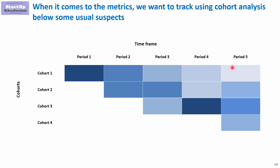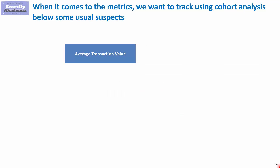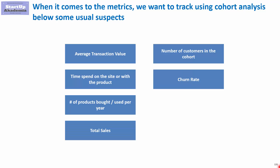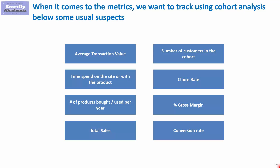As we have said in the cohort analysis, you want to track the behavior of a specific KPI in time by cohort. There are some usual suspects I recommend considering: average transaction value, time spent on the site or with the product, number of products bought, use per year, total sales, number of customers in the cohort, churn rate, percentage gross margin, and conversion rate. Most of these are around the behavior of the customer or how much value he generates for the company.